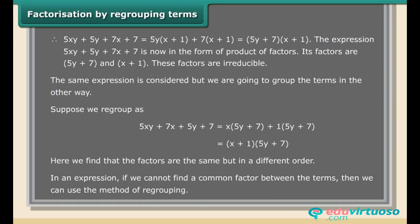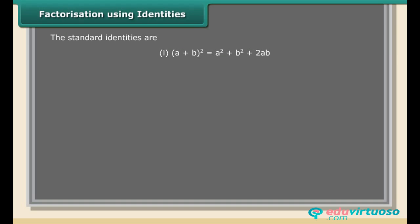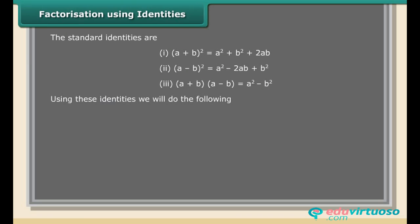If we cannot find a common factor between the terms, we can use the method of regrouping. Factorization using identities. The standard identities are: (1) (a + b)² = a² + 2ab + b², (2) (a − b)² = a² − 2ab + b², and (3) (a + b)(a − b) = a² − b².